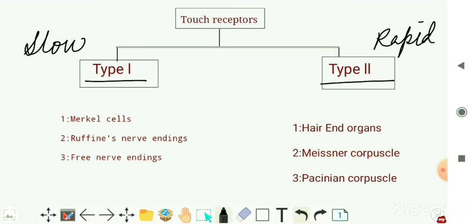Slow adapting means these receptors continue to respond as long as the stimulus is applied. Rapid adapting means these receptors respond only at the moment when the stimulus is applied.